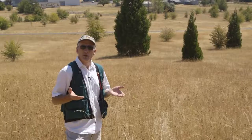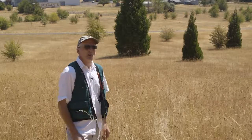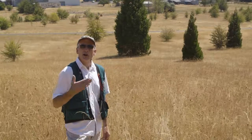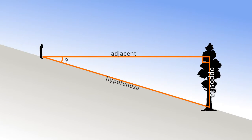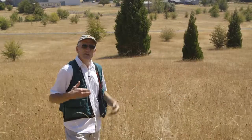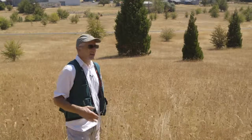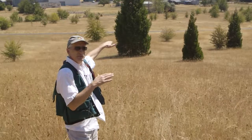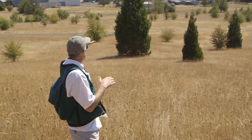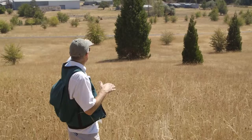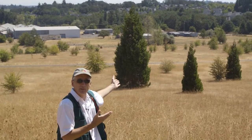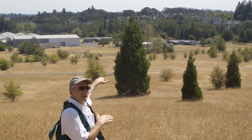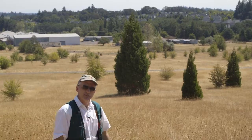In order to determine horizontal distance, we need to refer again to our right triangle. We have our horizontal distance between us and the tree — essentially a straight line pointing toward the leader of the tree. That's one side of our right triangle.